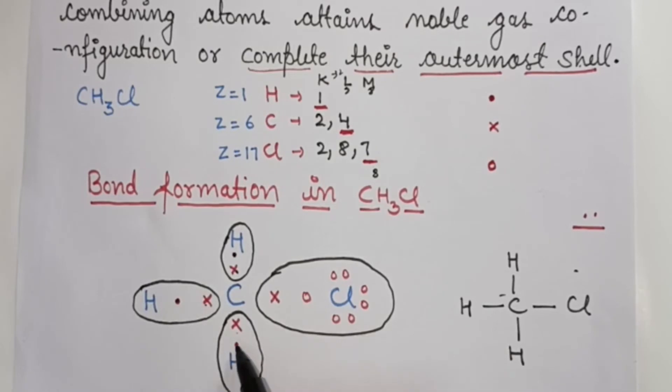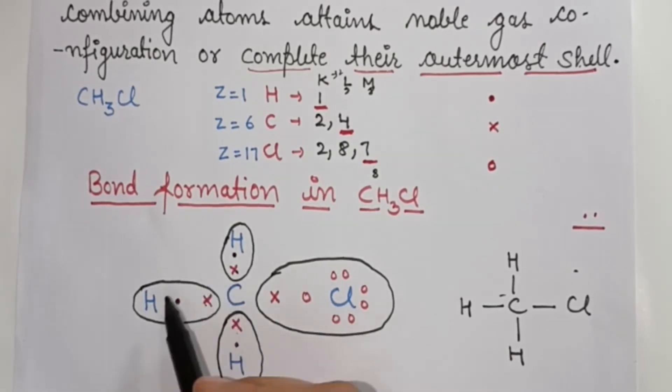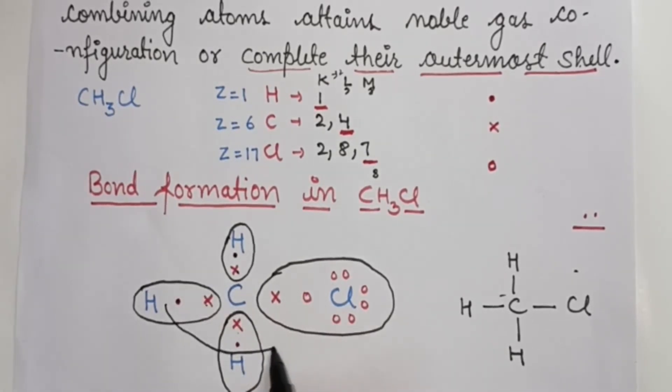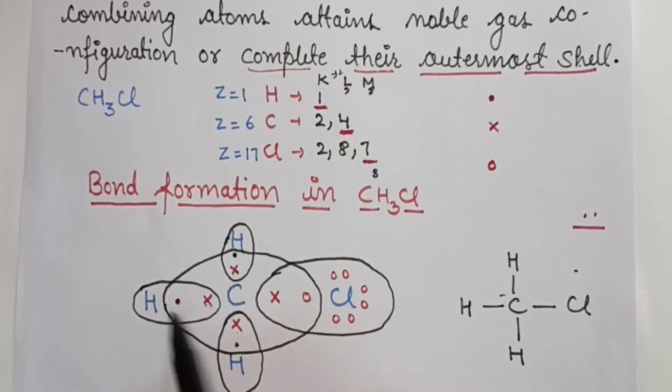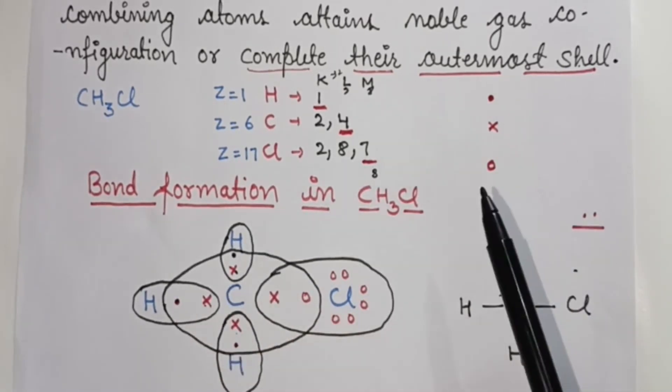So carbon needs 4 more electrons, total 8. Where will these come from? 1 hydrogen, 1 hydrogen, 1 hydrogen, 1 chlorine. This will complete the outer shell.